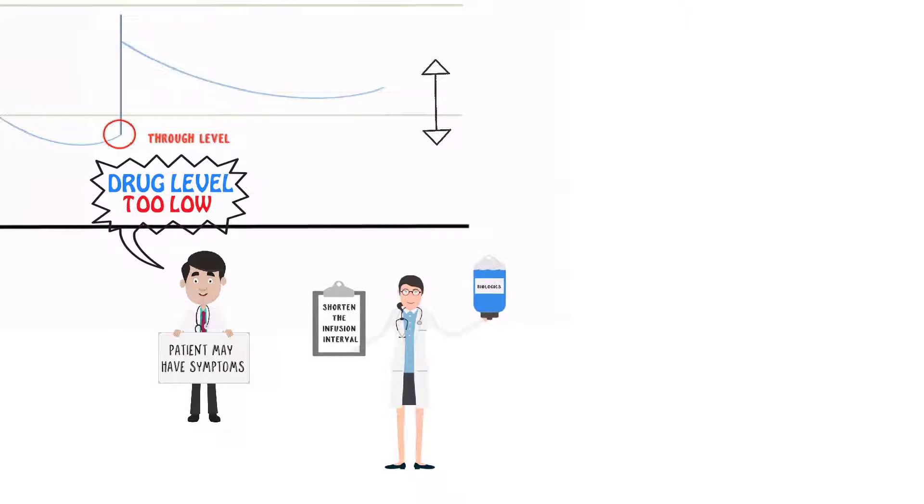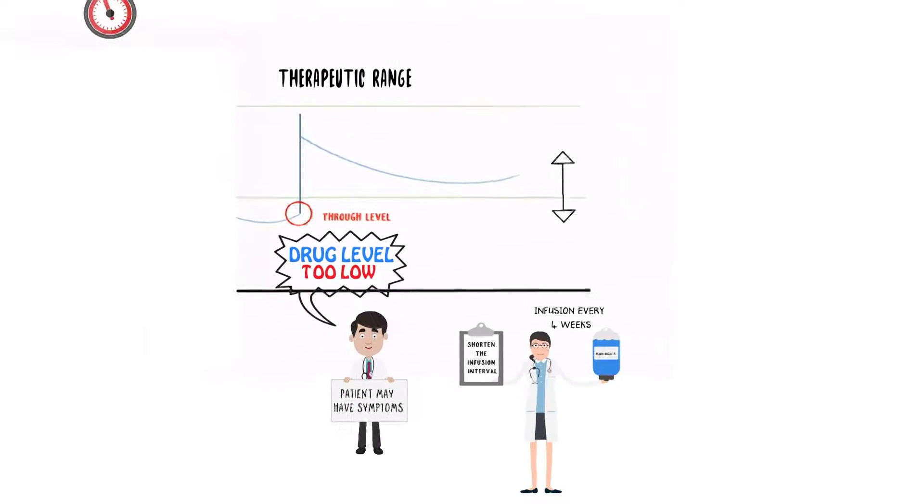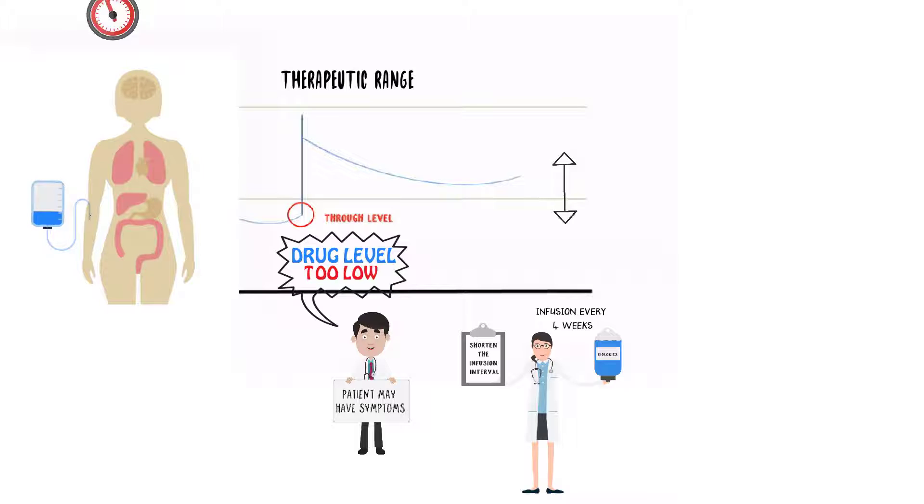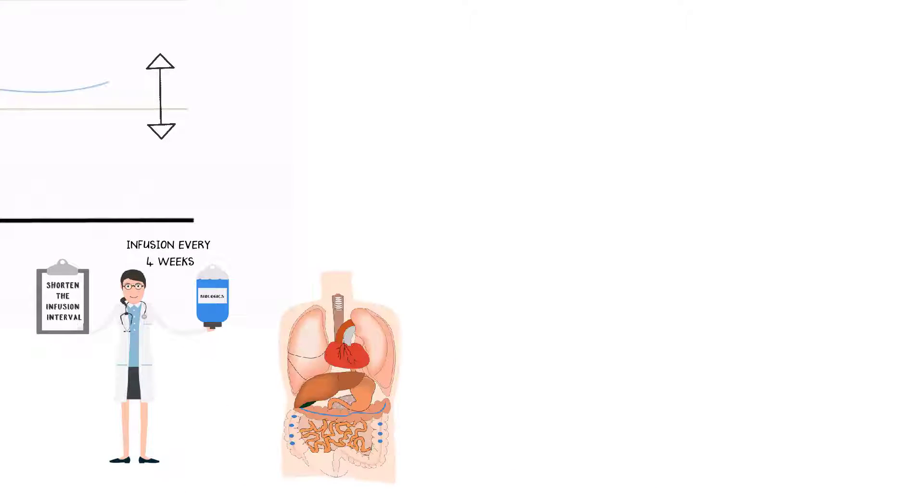In that case, oftentimes clinicians will shorten the interval so that the infusion is every four weeks, and sometimes clinicians will increase the dose and give the patient a higher drug dosage at the next infusion. It is important to not allow the drug level to get too low, because when it drops to an undetectable level, the body can produce anti-drug antibodies.